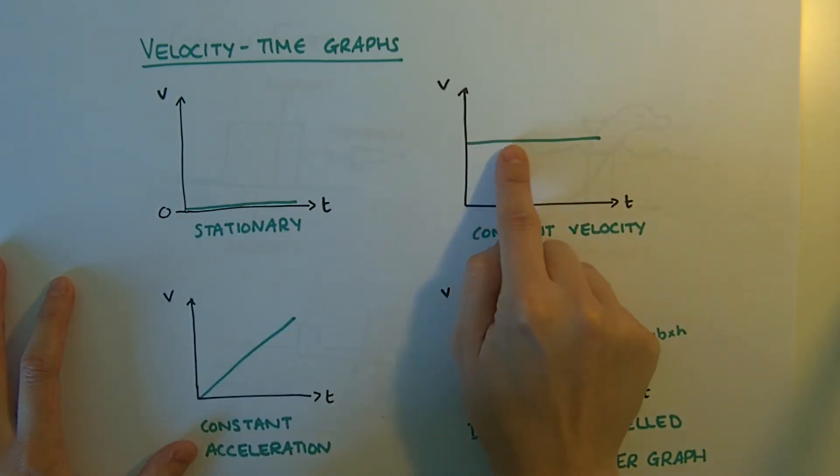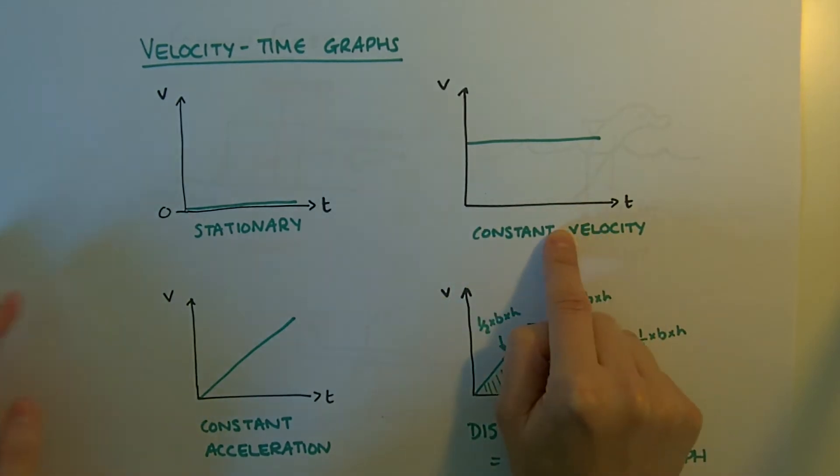Here the velocity, whatever this number is, is staying the same, so that's your constant velocity or constant speed.